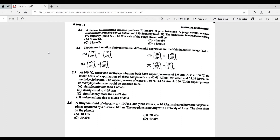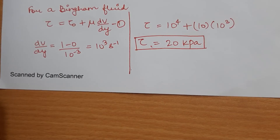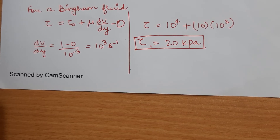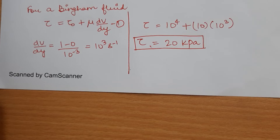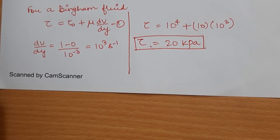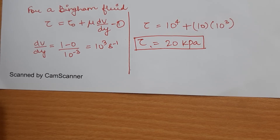Question 2.6: a Bingham fluid of given viscosity and yield stress is sheared between flat parallel plates. The top plate moves at 1 m/s. Find the shear stress on the plate. For a Bingham fluid, τ = τ₀ + μ·(dv/dy). We know dv and dy, giving a shear rate of 10³ s⁻¹. Substituting τ₀ and viscosity into the equation, τ = 20 kPa.